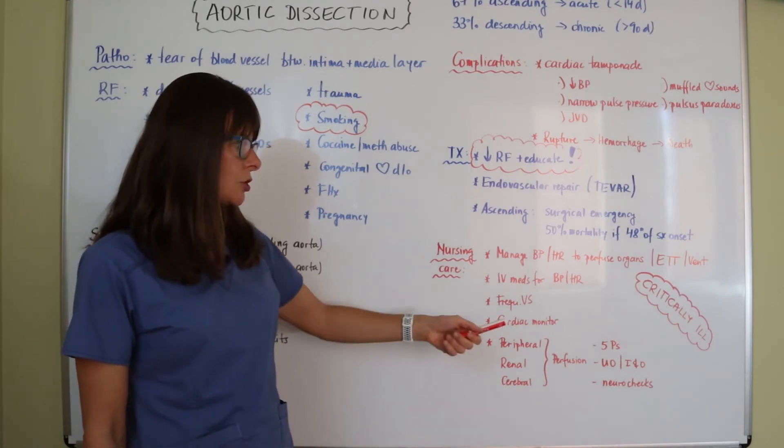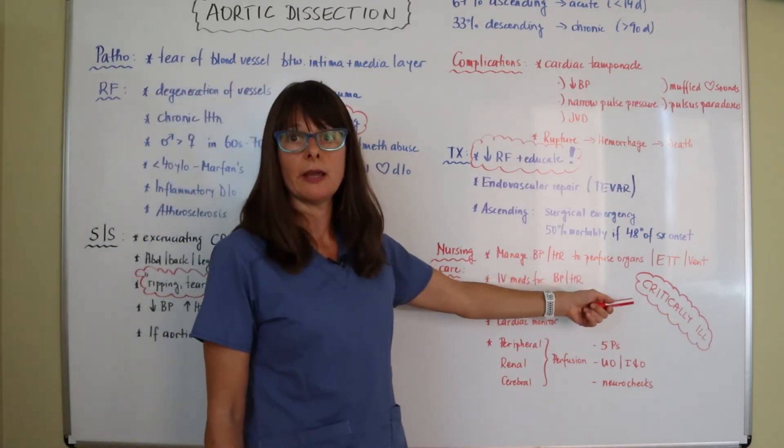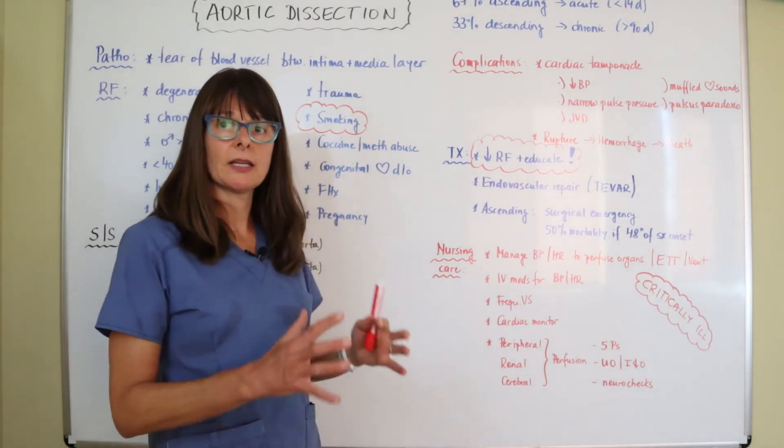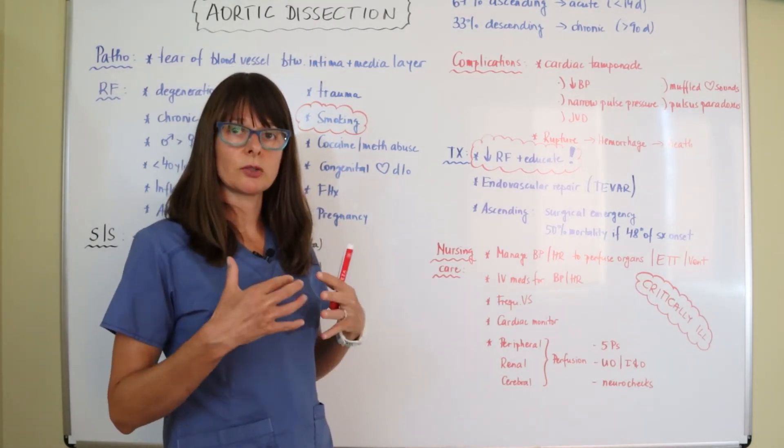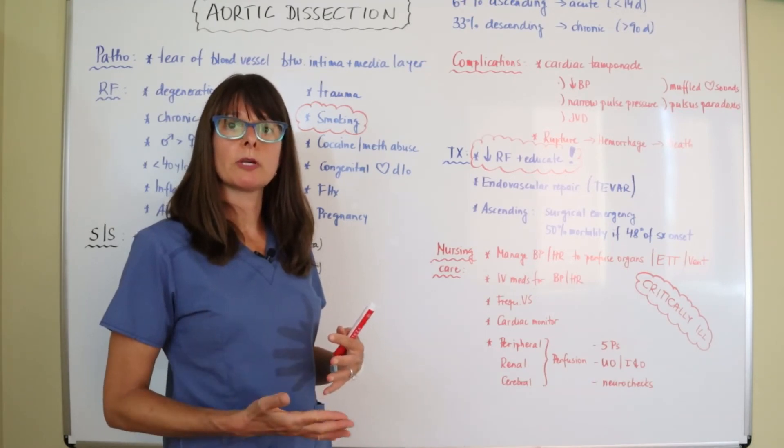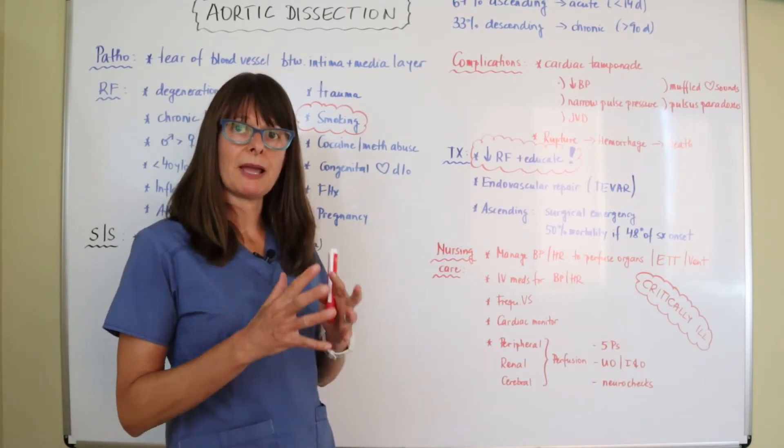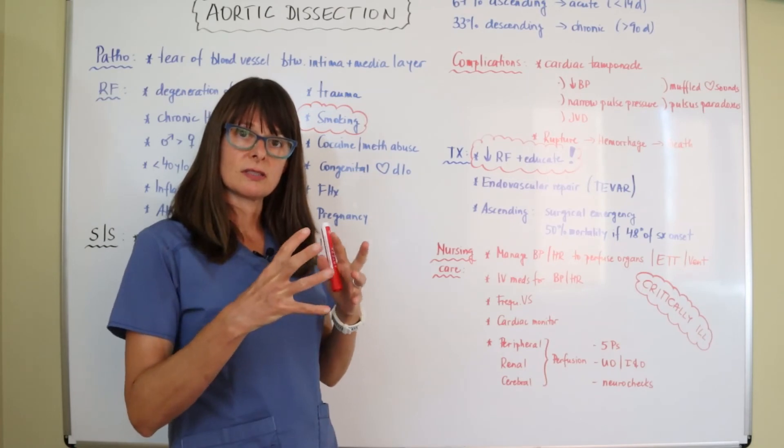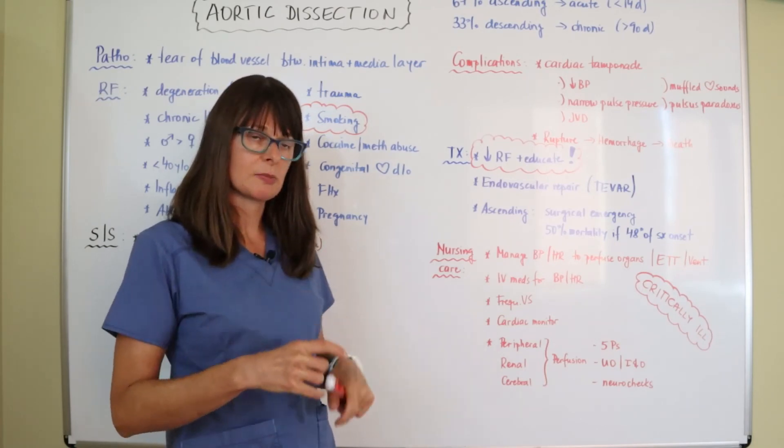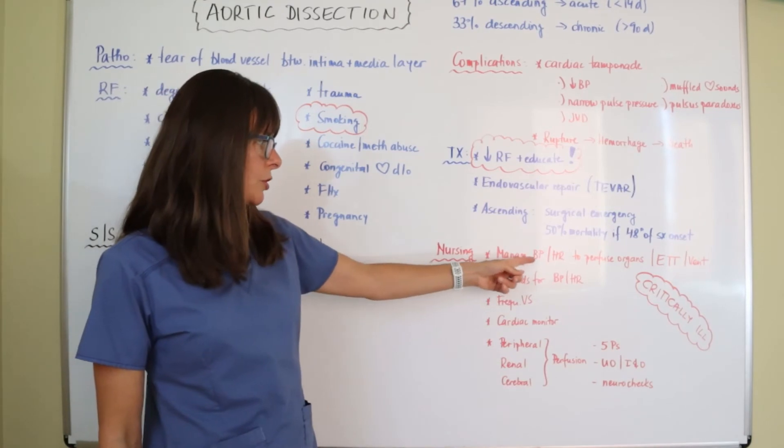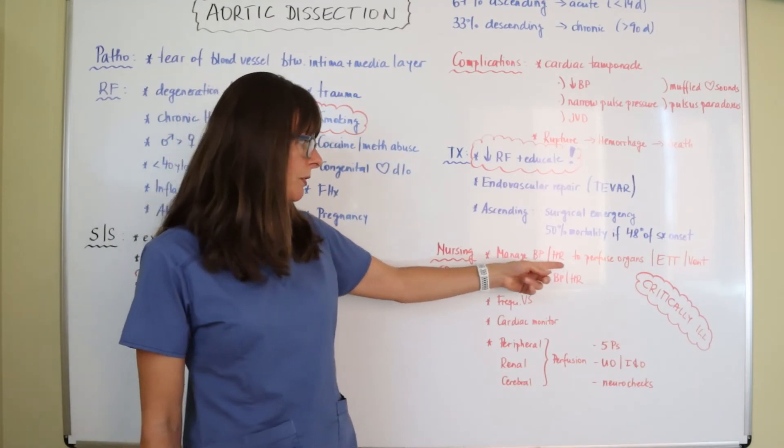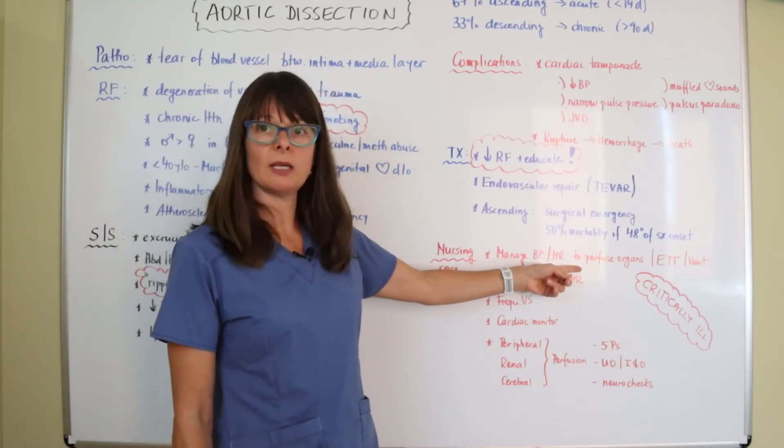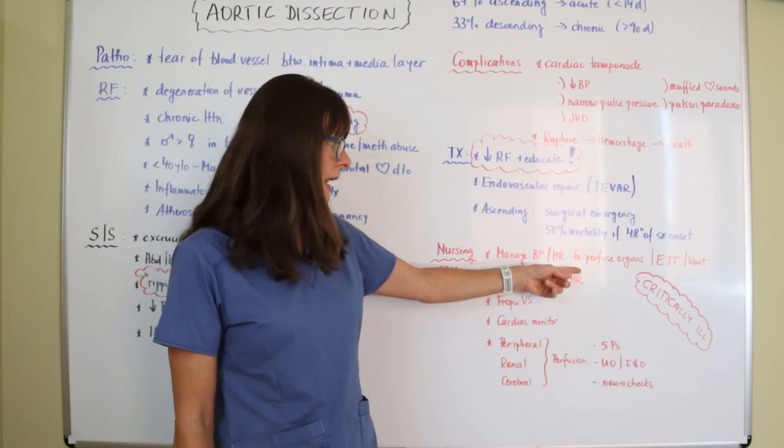Nursing care. So these patients are critically ill because they come in, something is going on with the major blood vessel in their body. So their perfusion might be altered and we need to make sure that we keep the blood pressure up as this dissection starts to expand. And so we need to manage the blood pressure and heart rate with crystalloids, maybe blood products, and maybe even vasoactive drugs to perfuse their organs so that we can keep their kidneys, their brain, and all their other organs alive.